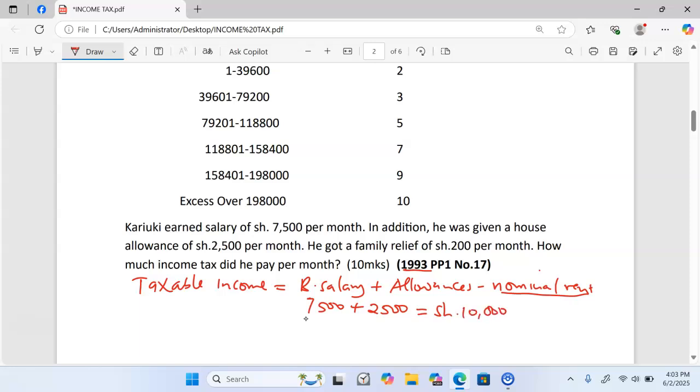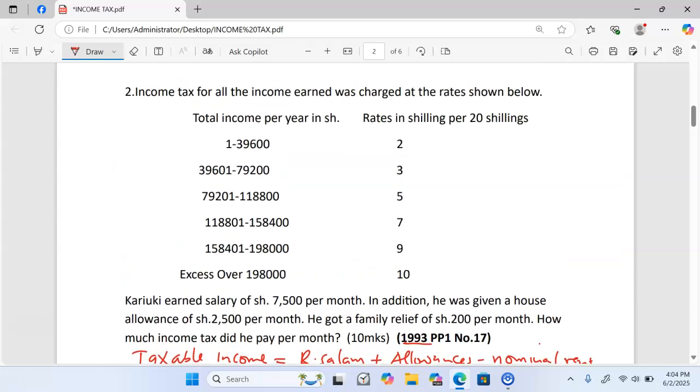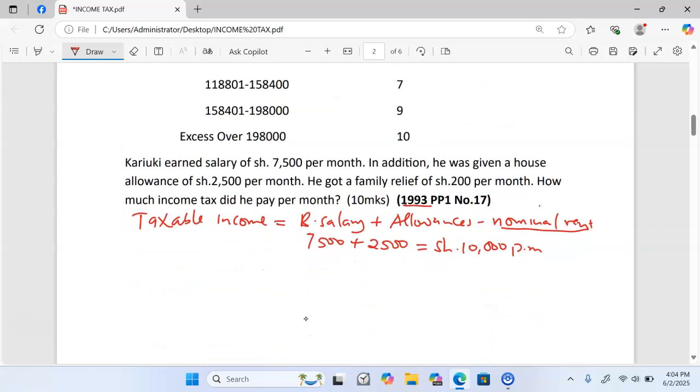From there we go to the left hand side and look at what the table says. The table says this is total income in Kenya shillings but per annum, and what we have is per month. So we have to change it into per annum. We are going to have 10,000 we multiply by 12 giving us a total of shillings 120,000 per annum as per the table.